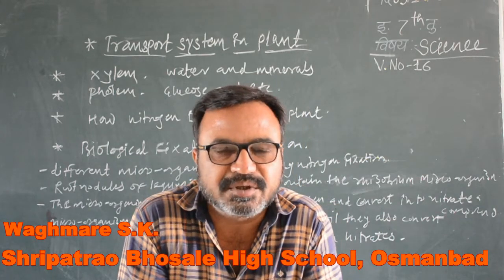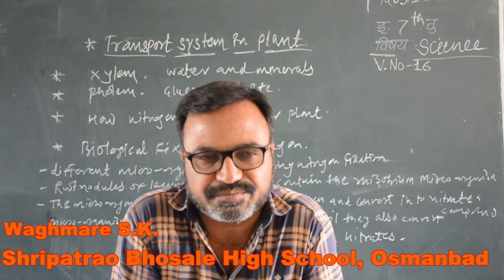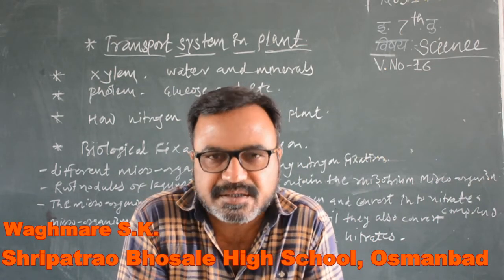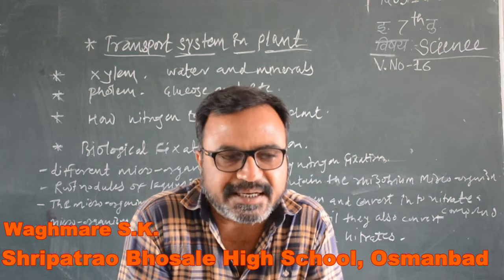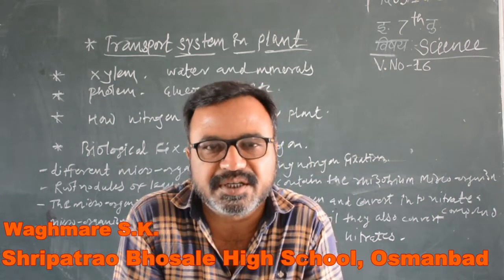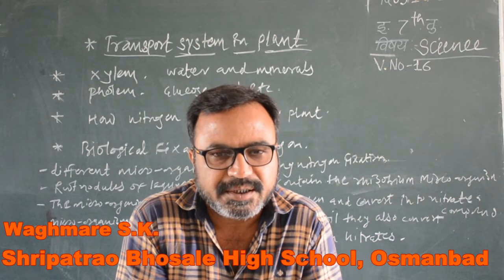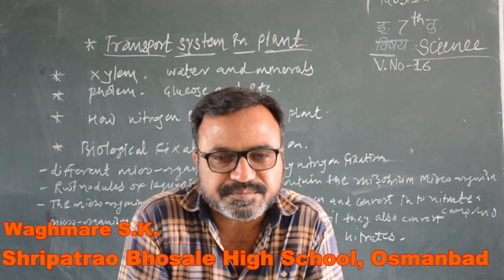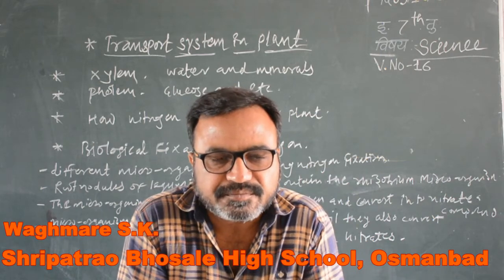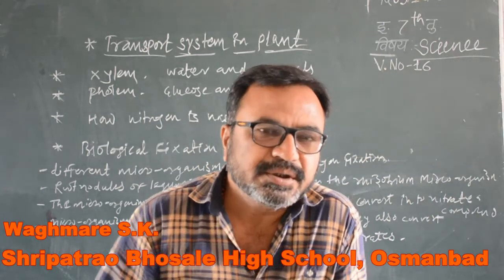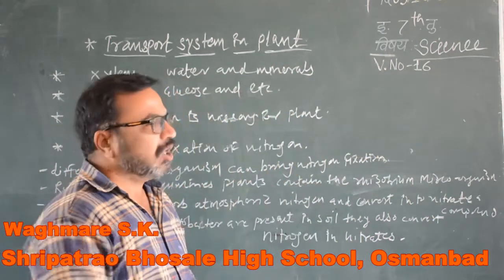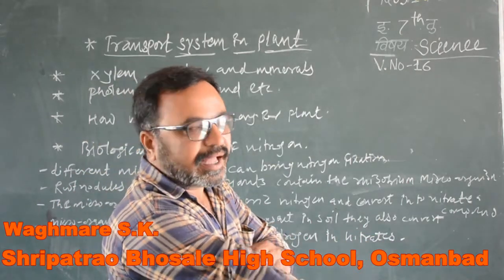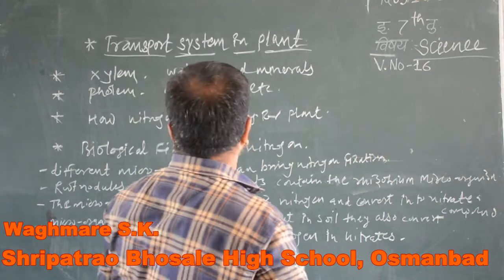The excretory system, digestive system, and other preparatory systems are not the same in the plant body as in the human body. Their mechanism is changed. Therefore, in the plant body, there are two main organs — two types of cells — and these cells are the xylem and the phloem.